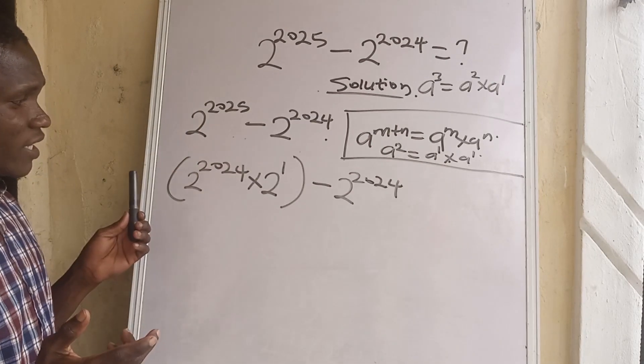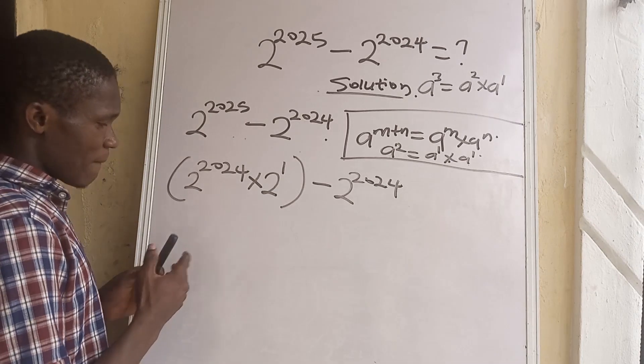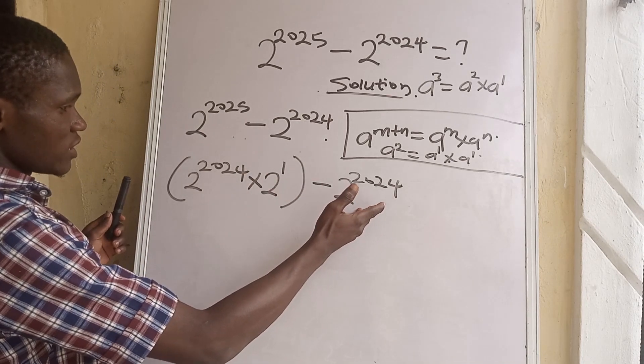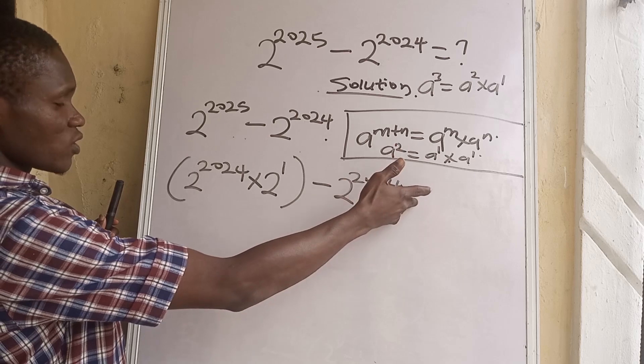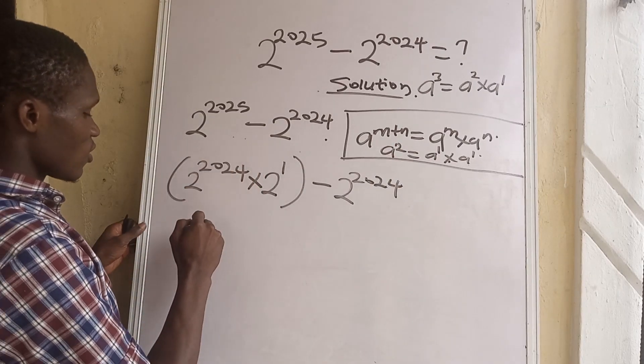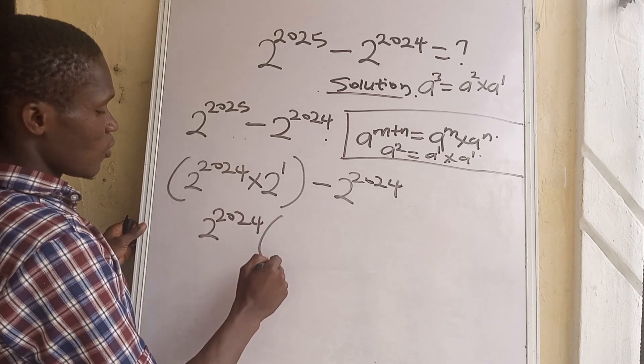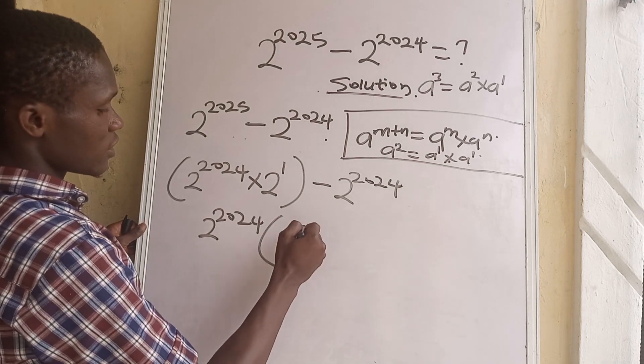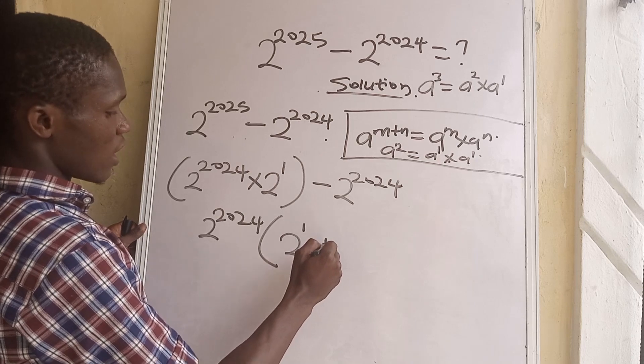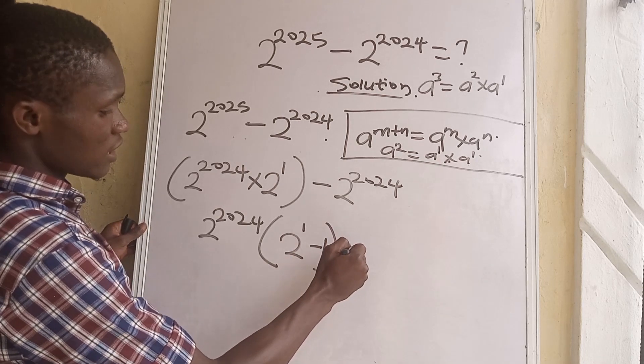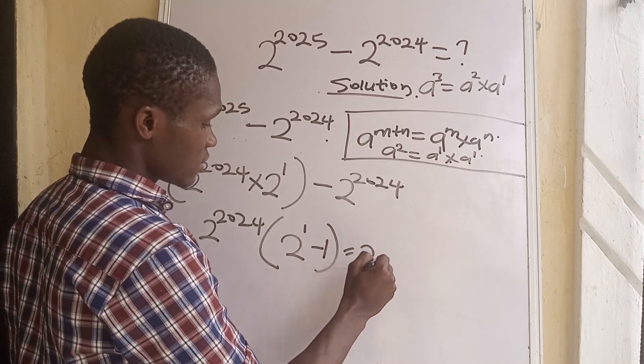After having this we can see that 2 to the power of 2024 is common, so I'm quickly going to factor it. I'm going to have 2 to the power of 2024 open bracket, 2 to the power of 1 minus 1 close bracket.